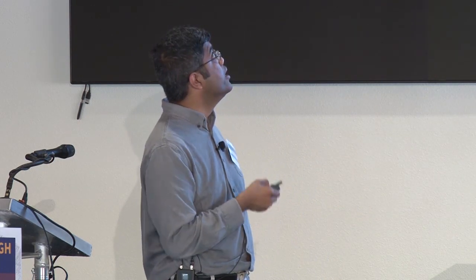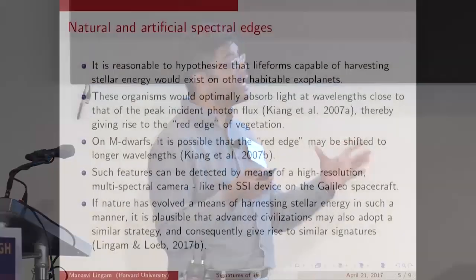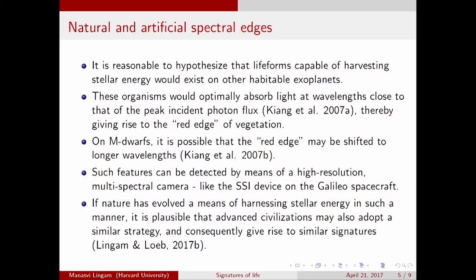The second thing I want to talk about is natural and artificial spectral edges. Photosynthesis is a pretty ubiquitous phenomenon on Earth and it relies on harvesting stellar energy. The reason we see a sharp increase in reflectance is because most organisms absorb light at wavelengths close to the peak incident photon flux, although other factors are also involved. This gives rise to the distinct spectral feature called the red edge, which I'll show in the next slide.